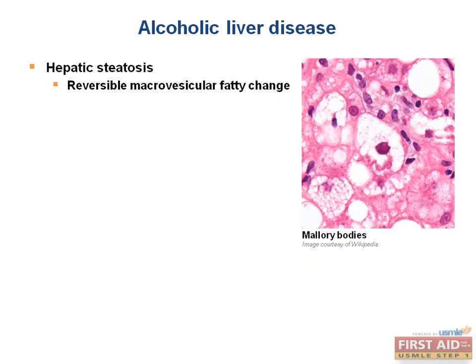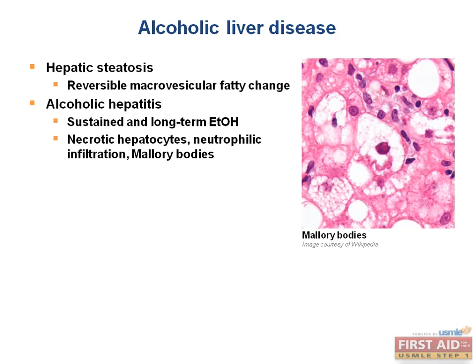Even moderate alcohol intake in the occasional social drinker can induce hepatic steatosis, which consists of a macrovesicular fatty change — completely reversible. With sustained long-term consumption, patients can go on to develop alcoholic hepatitis. Liver biopsies will show swollen and necrotic hepatocytes, neutrophilic infiltration, and the distinctive Mallory bodies, which are eosinophilic inclusions in the cytoplasm of hepatocytes. The AST levels are higher than ALT levels, typically a ratio of over 1.5.